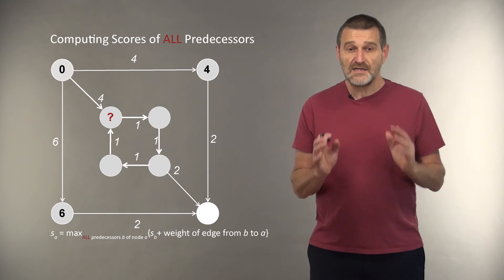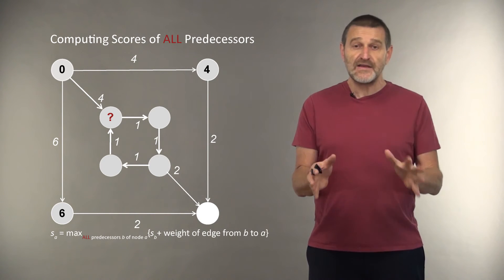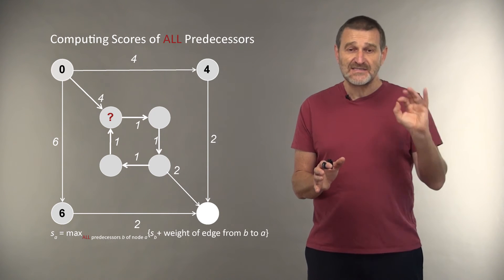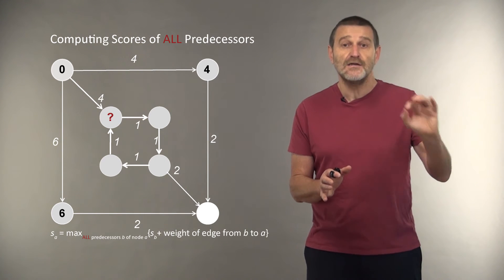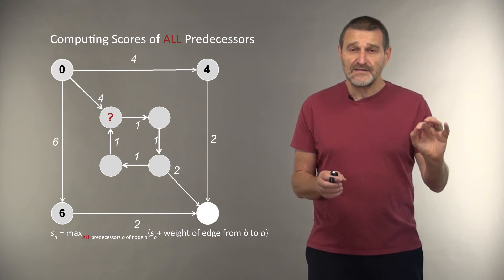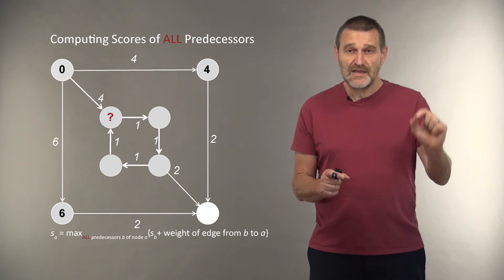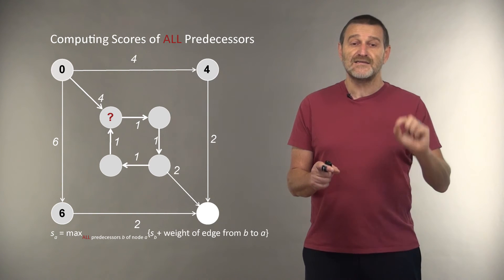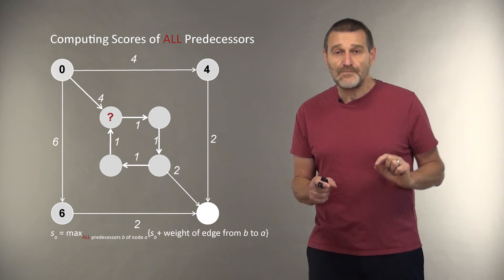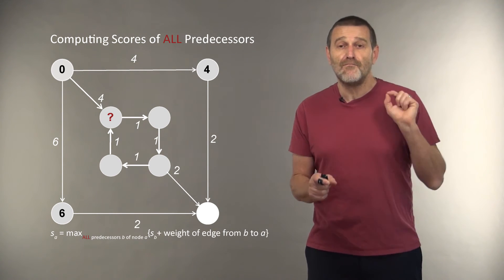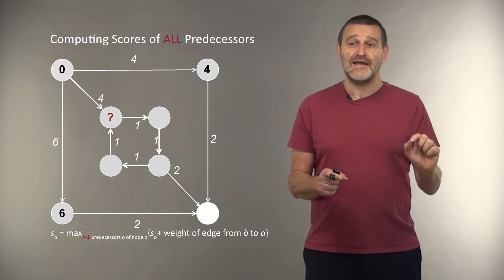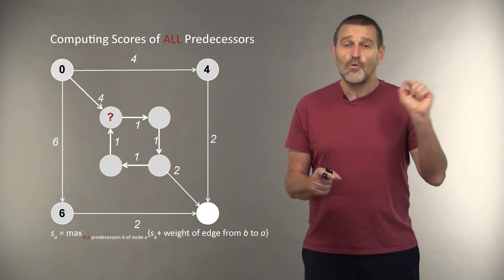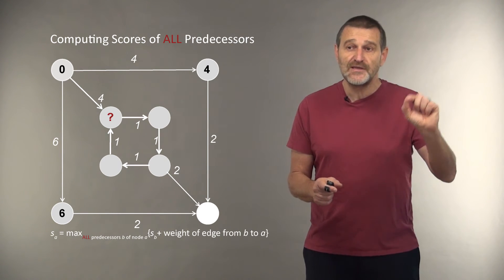We have now learned that to compute a score at a given node, we need to consider all edges entering into this node. And the initial vertex of each such edge is called a predecessor of a given node. Therefore, the recurrence for computing the longest paths in an arbitrary graph will be the following. Let's denote S(A) as the length of the longest path to node A. To compute S(A), we need to compute the maximum among all predecessors of node A, taking the maximum among the value score of each predecessor plus the weight of the edge from this predecessor to a given node.